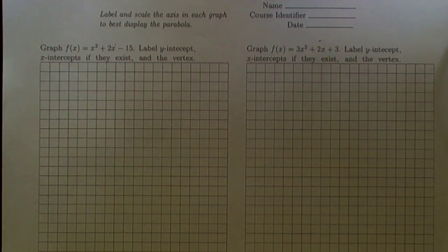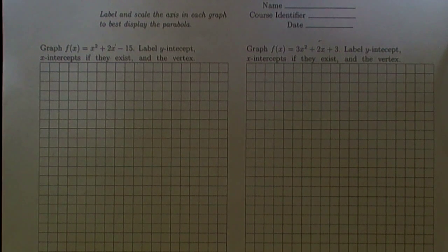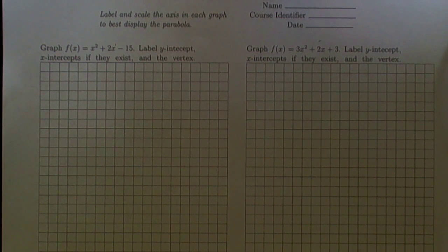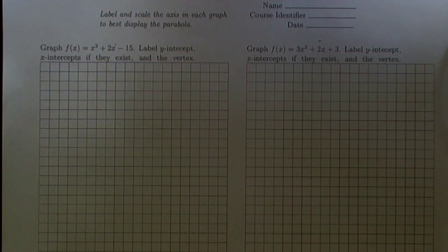When we're through we're supposed to have labeled the y-intercept, label any x-intercepts if they exist, and also label the vertex. Part of the challenge is to figure out how to get that graph to fit nicely on this graph paper. So let's begin by studying what we know about the graph.